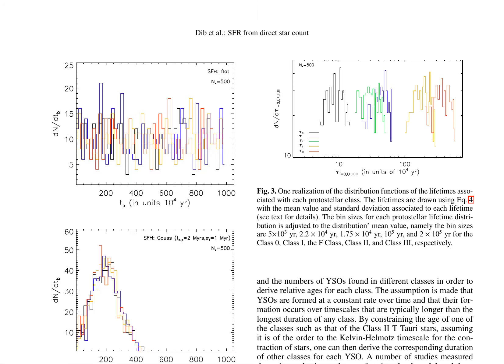The authors present four realizations of the birth time of protostars, each with a flat constant star formation history (SFH) and a Gaussian SFH. These realizations illustrate the different stages of protostellar evolution, including class 0, class 1, class 2, and class 3, which correspond to distinct phases of protostellar development. These stages include the formation of a YSO in the central region of a protostellar core, the collapse of the envelope onto the central object, the emergence of a disk around the central star, and the dissipation of the disk.